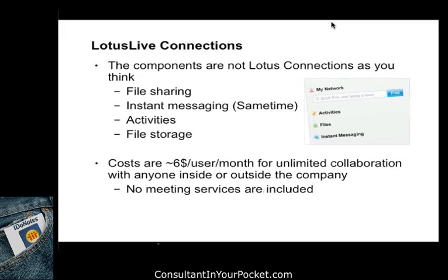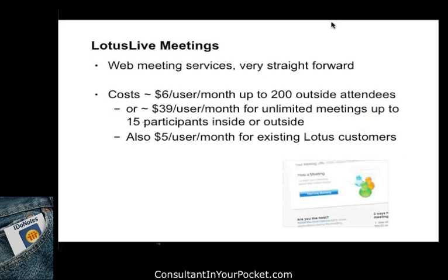The idea is that you don't have to worry about any of the back-end infrastructure, but this isn't full Connections as you know it, nor is it meeting services — it's a piece they call Connections. Meetings — picture Sametime 8.5.1, the new Sametime, but it's not Sametime. You're running across another infrastructure that they have running meetings themselves. It has a bunch of cost variables built into it, and this is where hybrid modeling and hosting modeling gets confusing — how do I currently fit in with my current licensing model in Domino? Is this part of it? Can it be expanded?